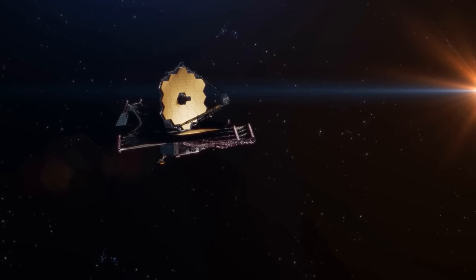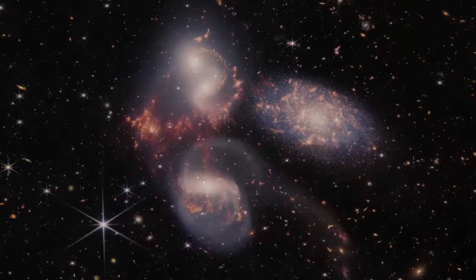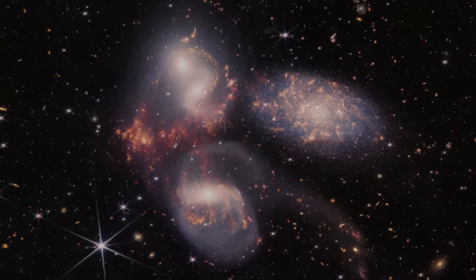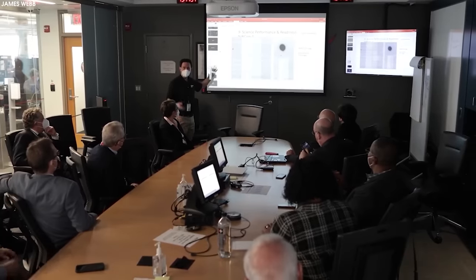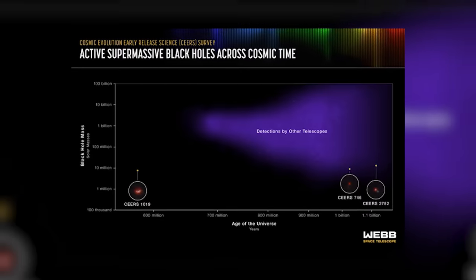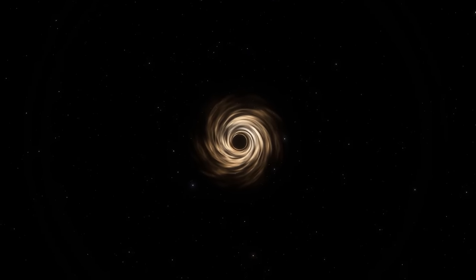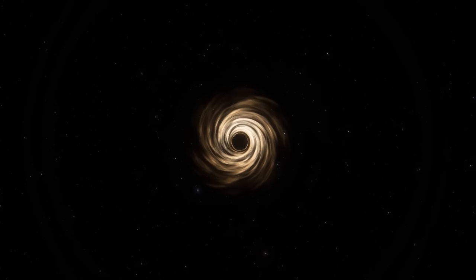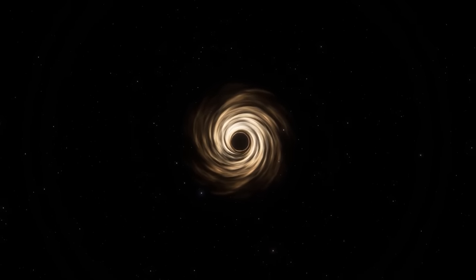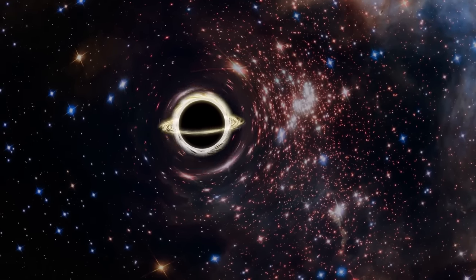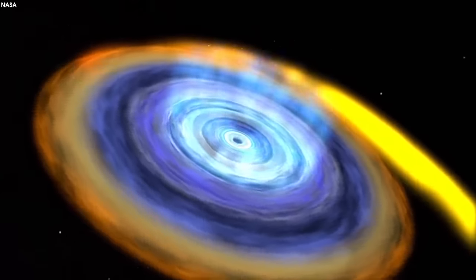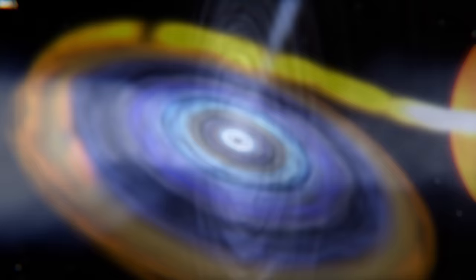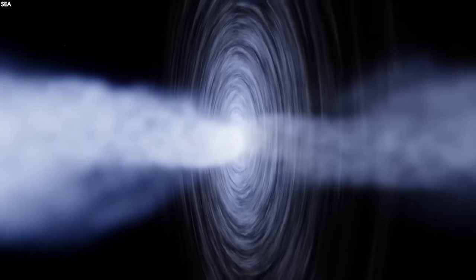Whenever you look at the universe with new, superior tools, the only thing you should be certain of is that you'll find something, and maybe multiple things, that surprise you. And so it was in July of 2023, web researchers from the Sears collaboration reported the discovery of Sears 1019, a black hole of 9 million solar masses coming from when the universe was just 570 million years old, breaking the record for most distant black hole. So long as this black hole represented no more than less than 1% of the total mass of the galaxy, which it did, the universe should have no problem forming black holes this massive this early.